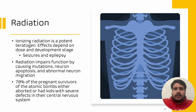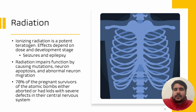The last type of teratogen that we will cover in this video are physical agents such as radiation. Ionizing radiation is a very potent teratogen and its effects depend on the dosage and the developmental stage of the embryo. For example, the effects have been shown to include seizures and epilepsy, but also structural defects such as neural tube defects. Furthermore, radiation has been shown to impair the function of the central nervous system of the fetus by causing mutations, neuronal cell death especially in the cortex, and abnormal cell migration and cell division.